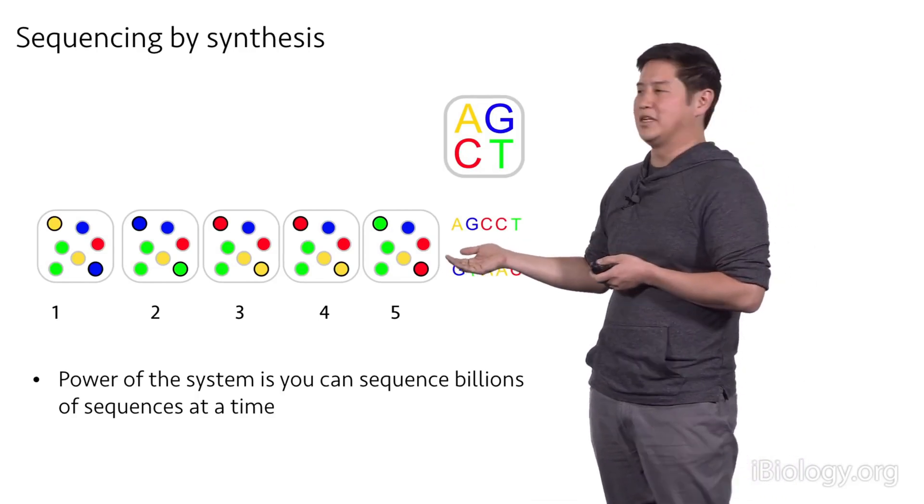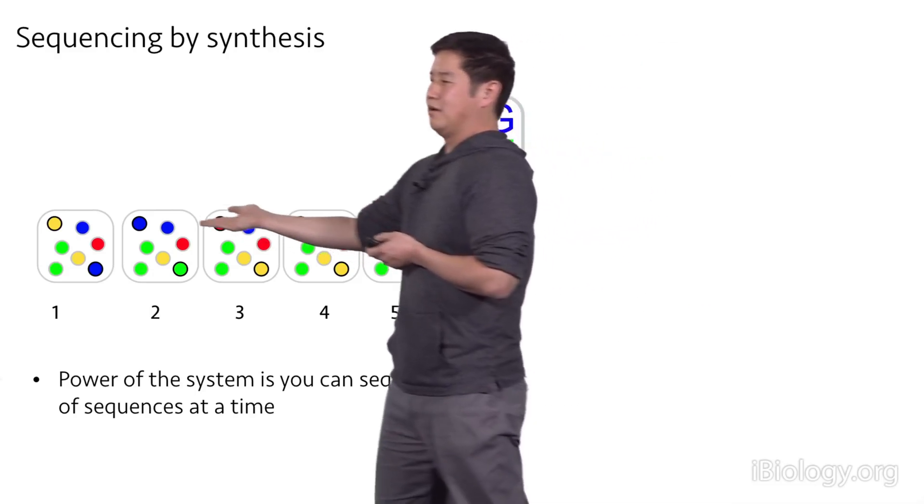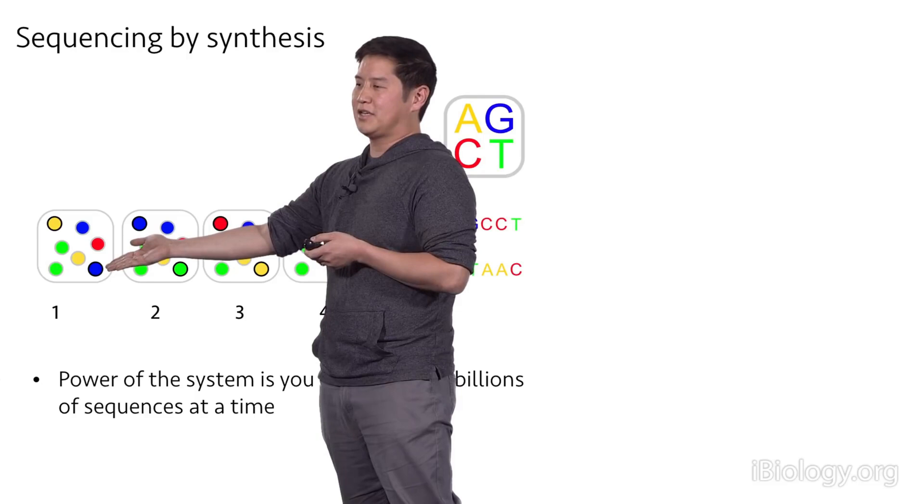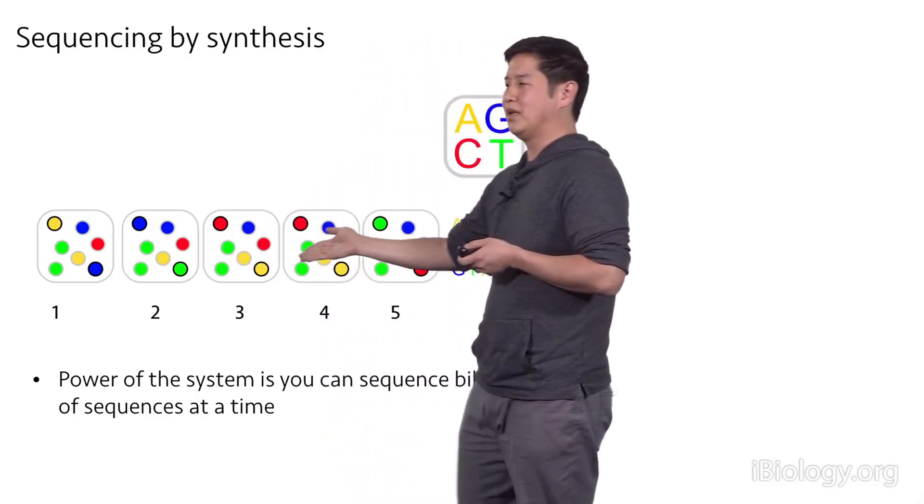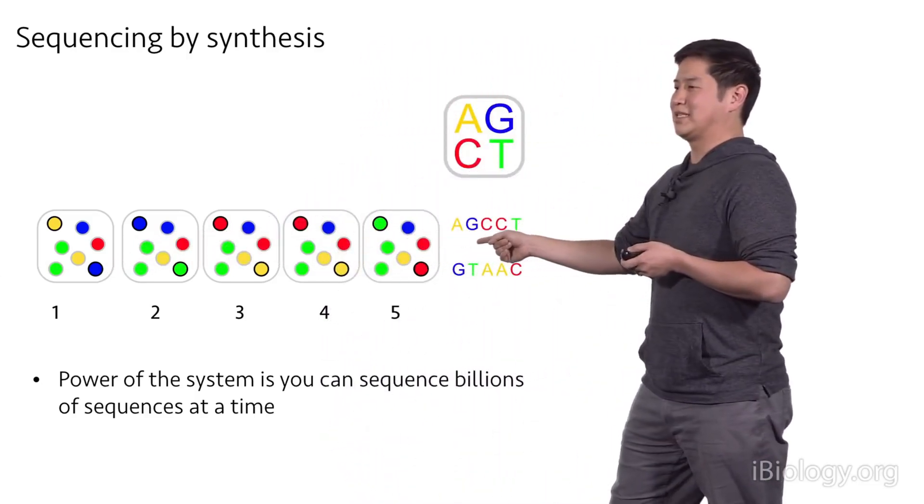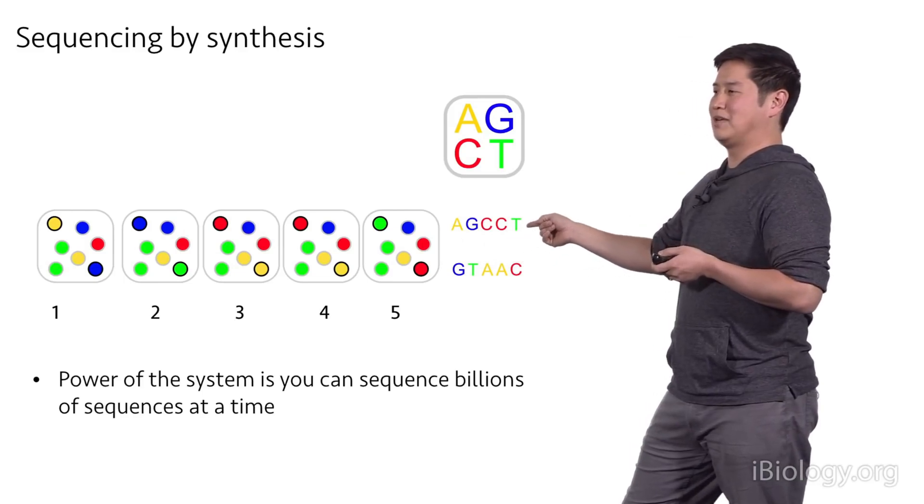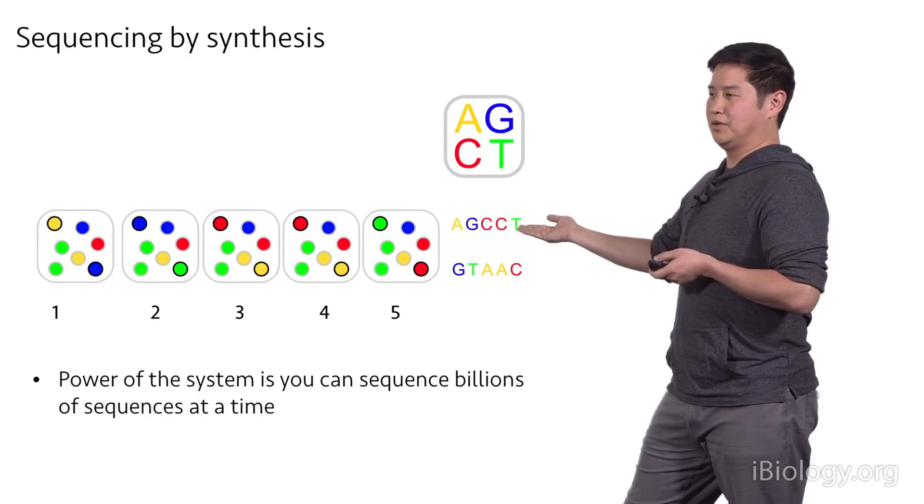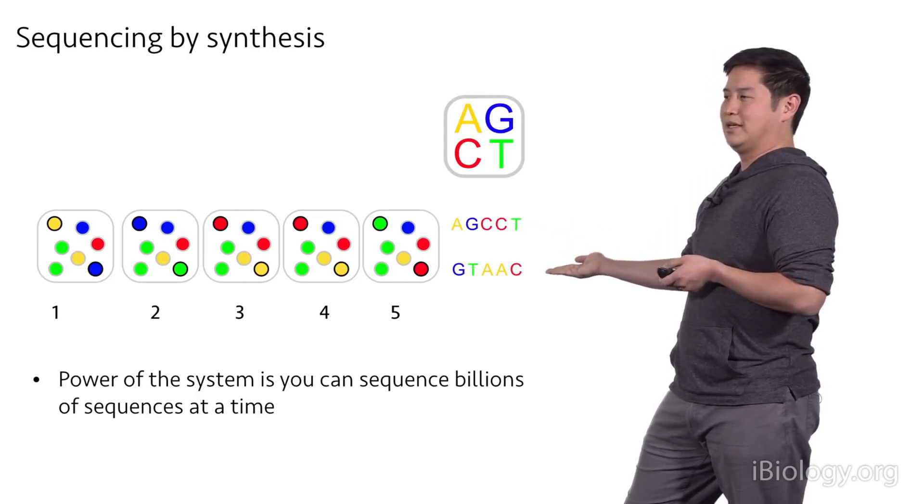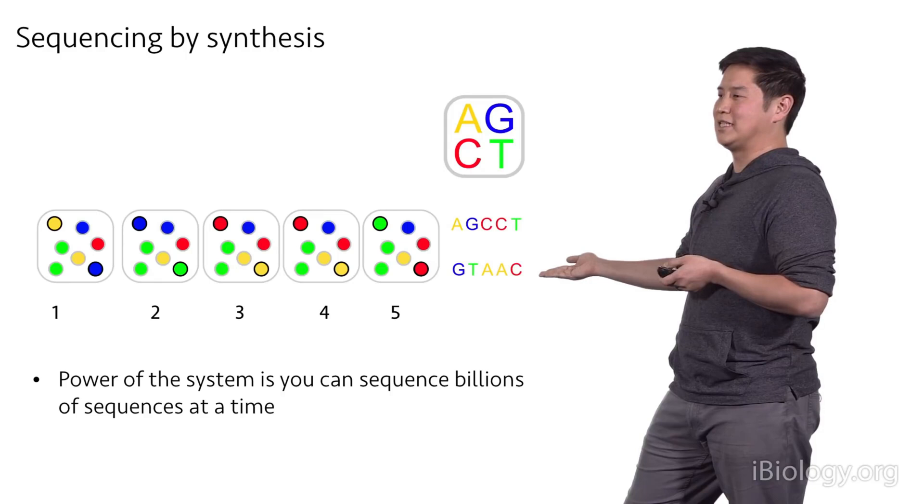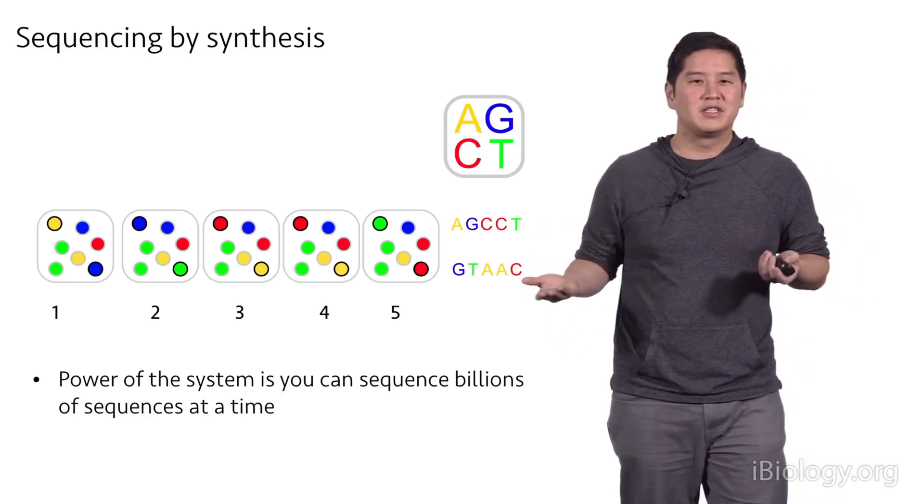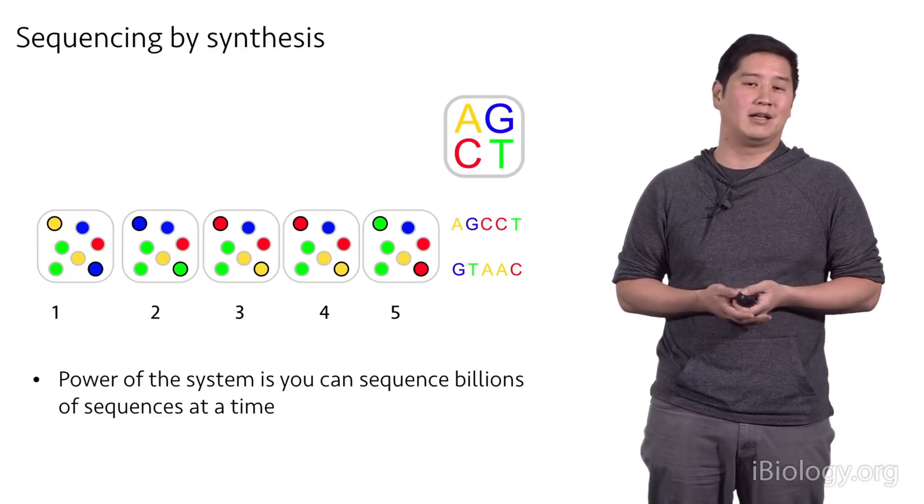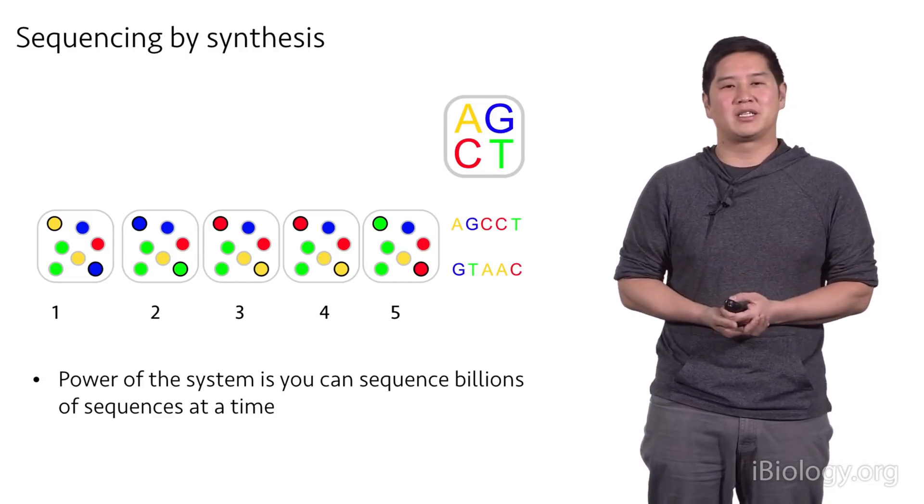And so if we take a look at this depiction of five different cycles, so each of these represents a different image taken. And if we follow the top left and the bottom right clusters and see how those colors change over time, we can actually build the sequence. So the top cluster, the sequence is going to be A, G, C, C, T, because it goes from yellow, blue, red, red, green. And the bottom one is G, T, A, A, C. And so again, the power of the system is that you can sequence up to billions of sequences at the same time in parallel. And this is what gives these instruments their throughput.